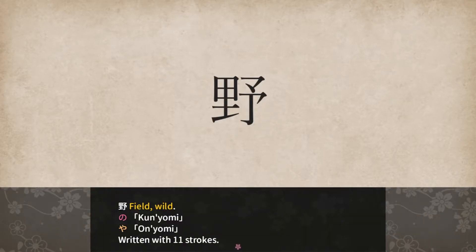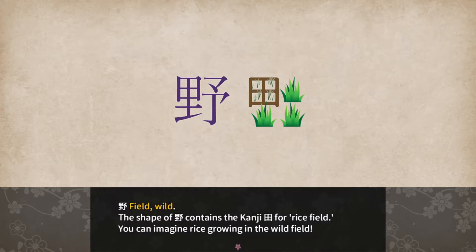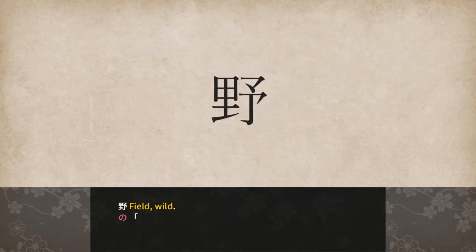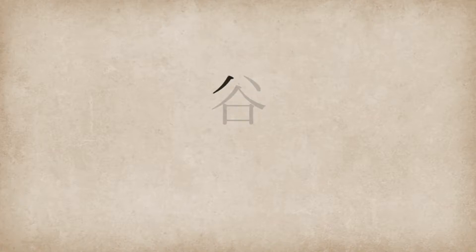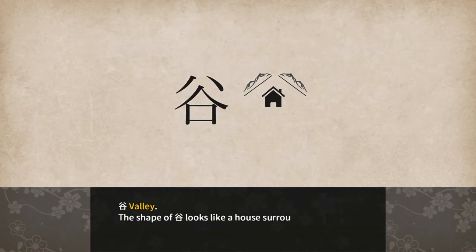野 (no/ya): field or wild — no for kun'yomi or ya for on'yomi, written with 11 strokes. The shape of ya contains the kanji den for rice field — you can imagine rice growing in the wild field. You can see in the wild field you can see a bit of a walk surrounded by a valley.